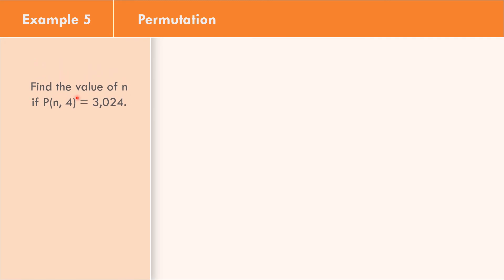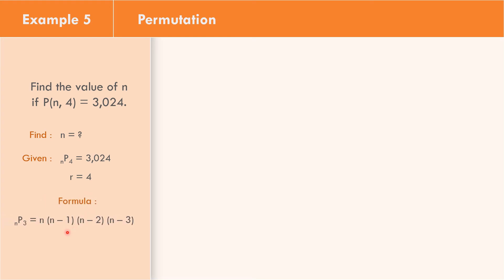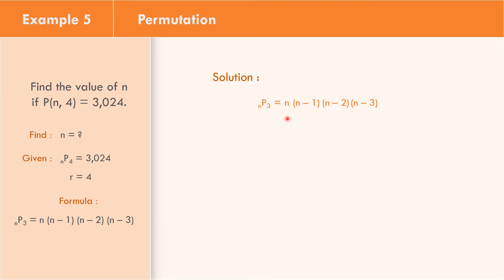How about number 5? Find the value of N if P(N, 4) equals 3,024. Similar to problem number 4, the value of N is unknown. Permutations of N objects taking 4 at a time equals 3,024. Our R equals 4, so it means N times (N minus 1) times (N minus 2) times (N minus 3) — four consecutive terms. Let us continue to solve: permutations of N objects taking 4 at a time equals N times (N minus 1) times (N minus 2) times (N minus 3) equals 3,024.